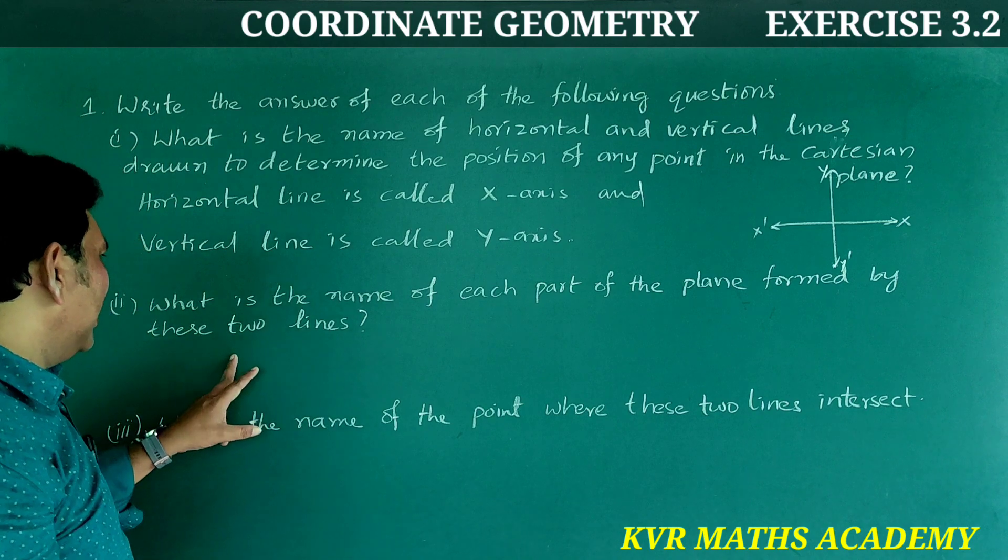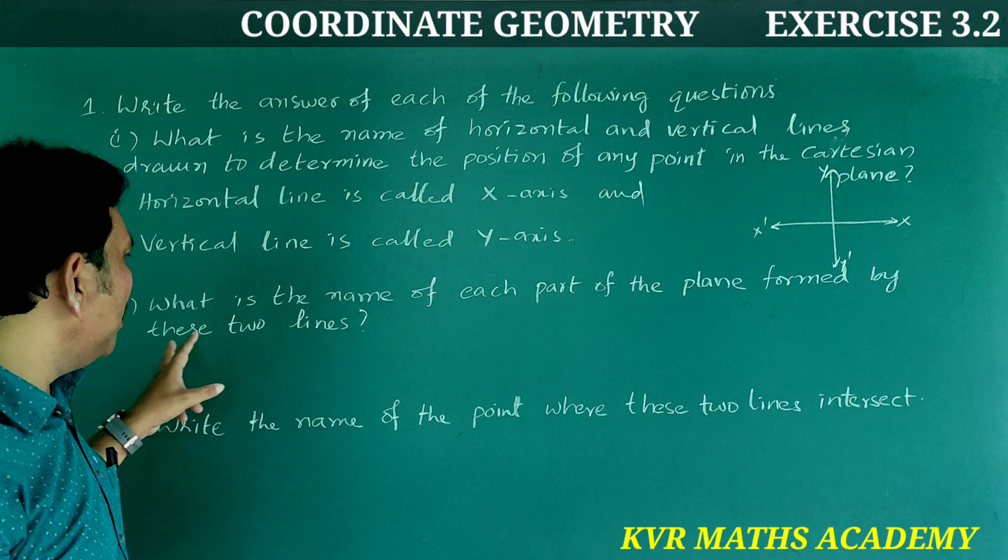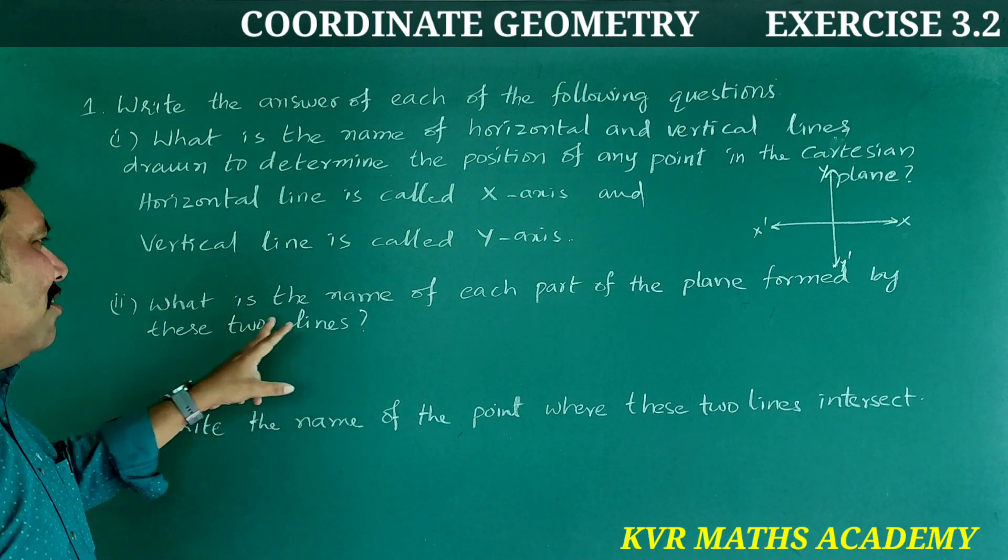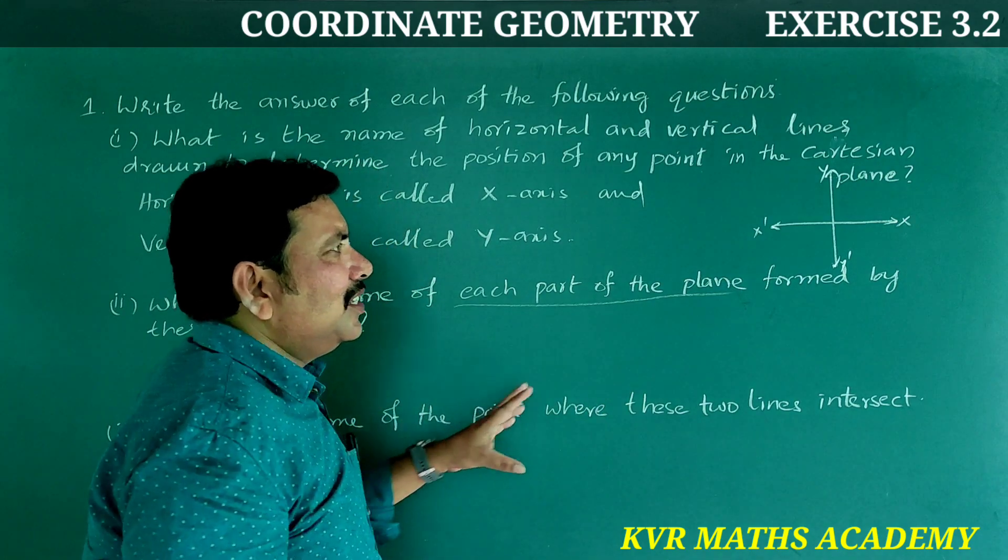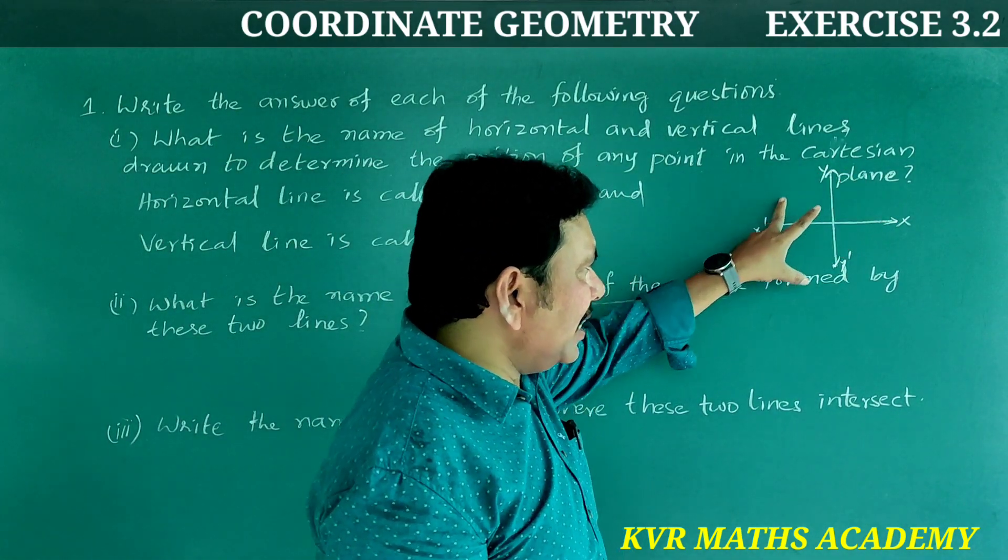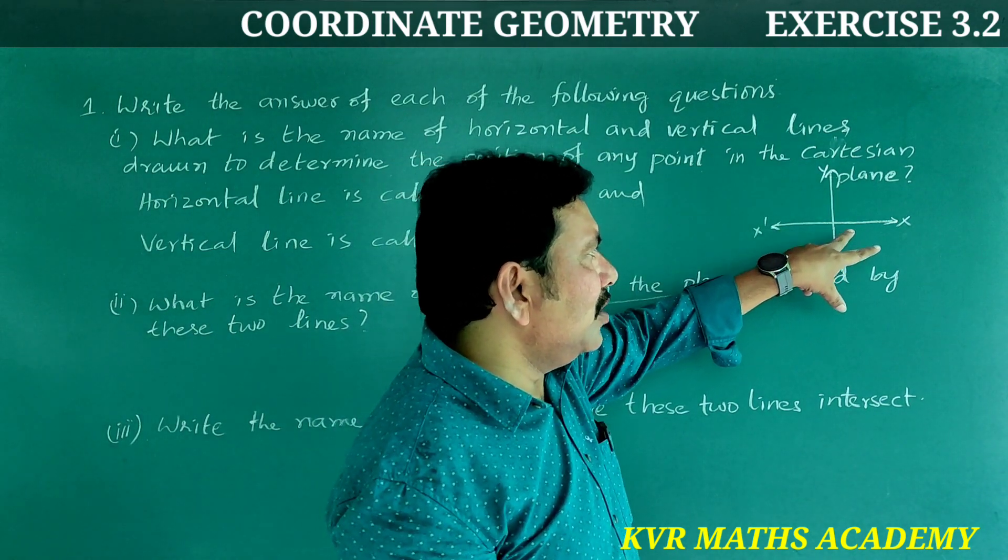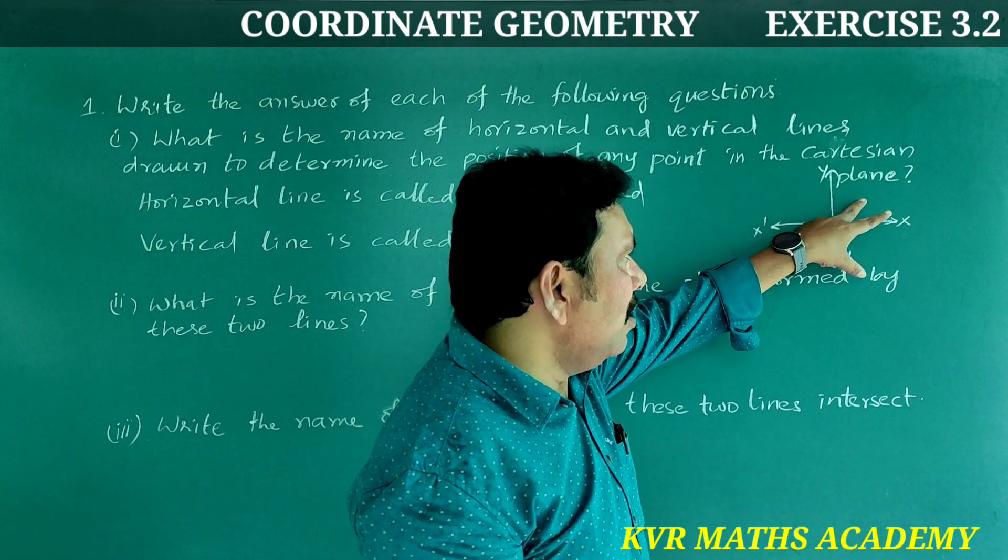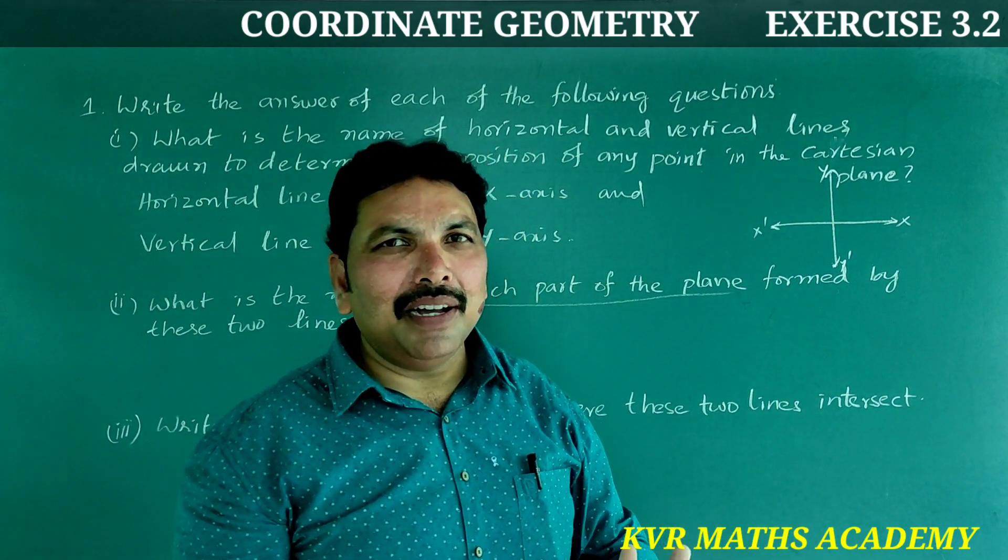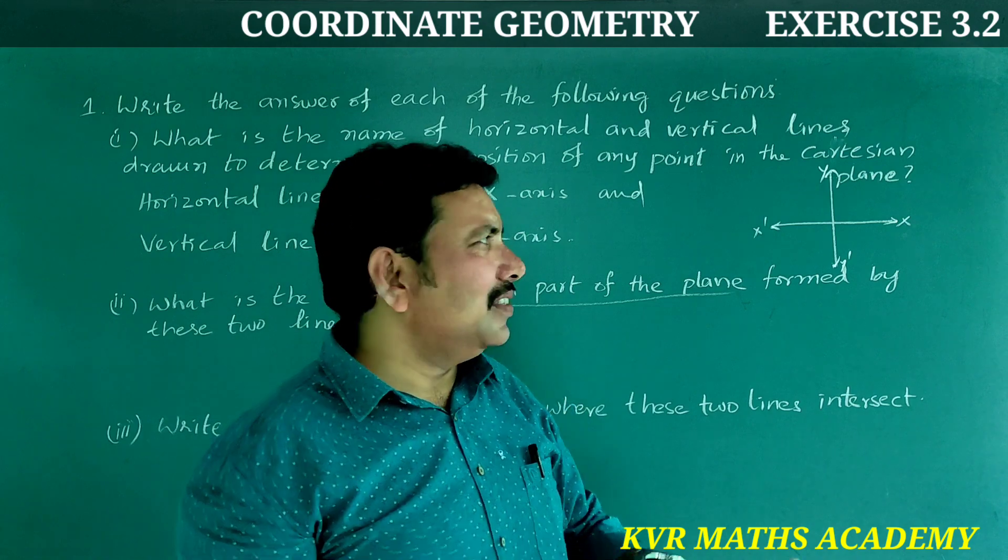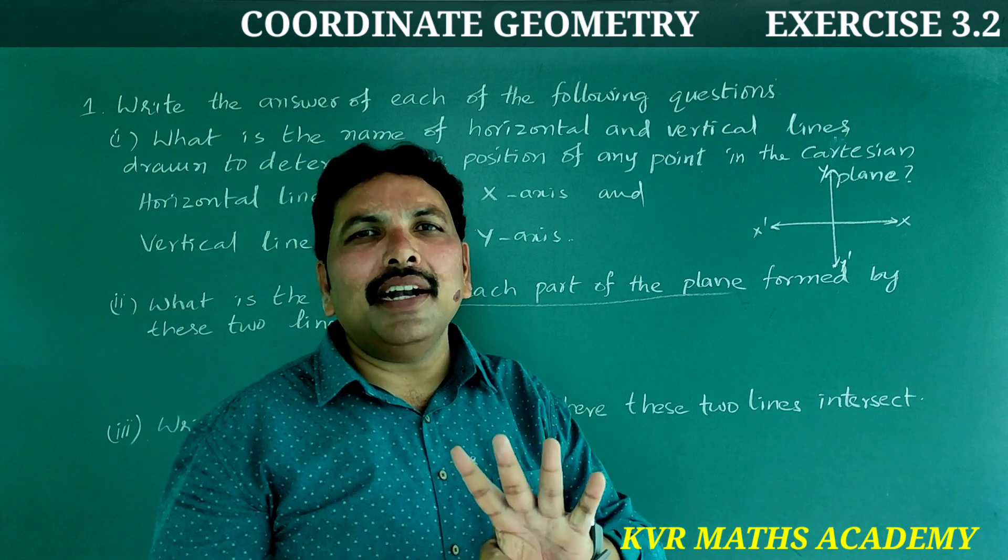Second question: What is the name of each part of the plane formed by these two lines? The plane is divided into four parts - the x-axis and y-axis intersect, dividing the plane into one, two, three, four parts. So the name of these four parts is quadrants. The x-axis and y-axis divide the plane into four quadrants.